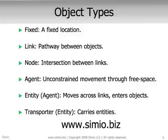Agents are a type of object that's dynamic, that moves through the system, and agents can move through free space. The next type is an entity, which is a subclass of an agent — it has all the same behavior as an agent, but in addition it can move across links and enter into other objects. And finally, a transporter, which is subclassed from entity, can pick up, drop off, and carry other entities. Examples of transporters would be carts and AGVs.